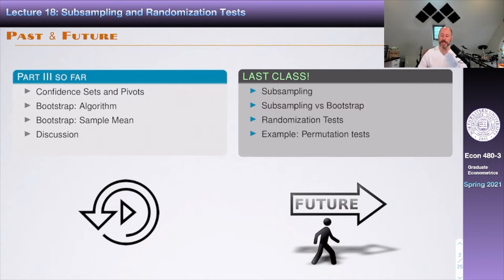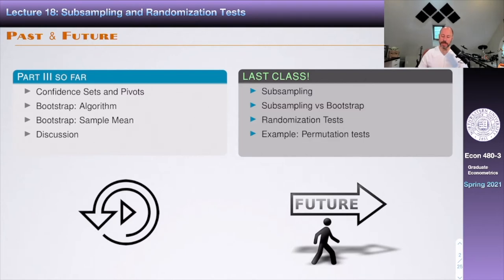Then we're going to talk about randomization tests. Randomization tests is a family of tests that includes the so-called permutation tests as a special case. Permutation tests are popular and often misunderstood. These last two lectures in 480 are a bit more advanced conceptually, introducing some things you could see in the 481 sequence. I cover more about bootstrap, subsampling, and randomization tests in 481.3.